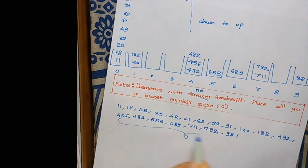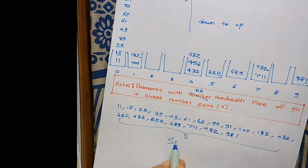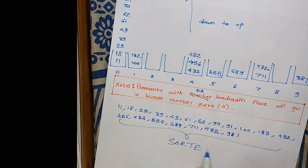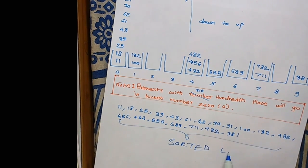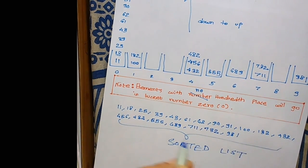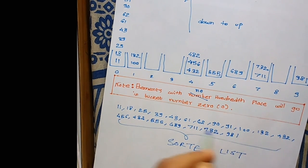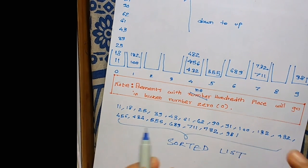This is our final sorted list. This is our answer. You can see how magically all these numbers are sorted automatically by these three steps. That's how you sort.